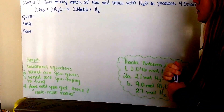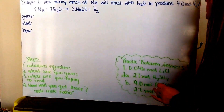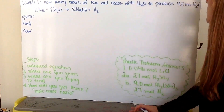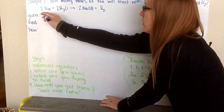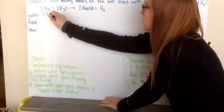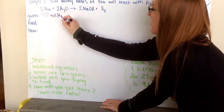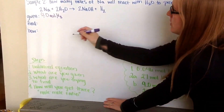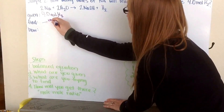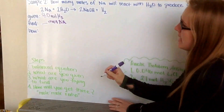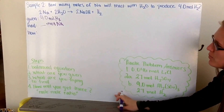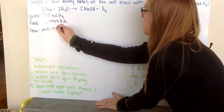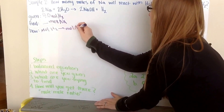Next, sample problem two: how many moles of sodium will react with water to produce 4.0 moles of hydrogen gas? First, I write down what I'm given — 4.0 moles of H2. Then, what am I trying to find? I'm trying to find moles of sodium. Next, I determine how I'm going to calculate moles of sodium.